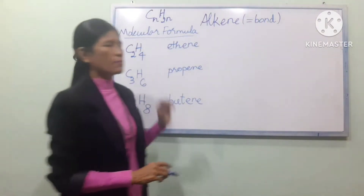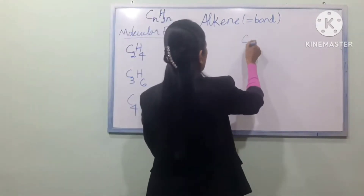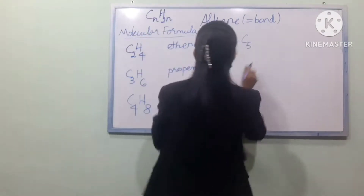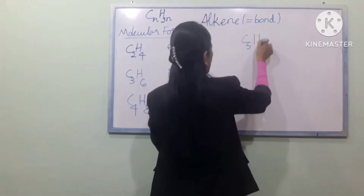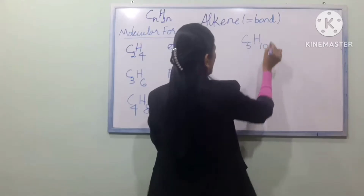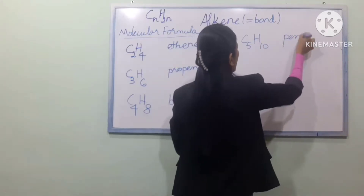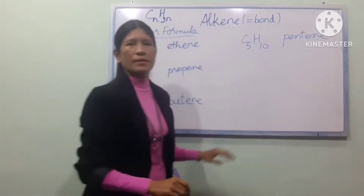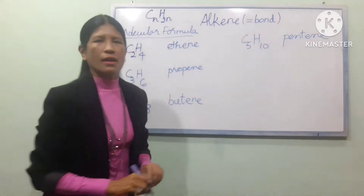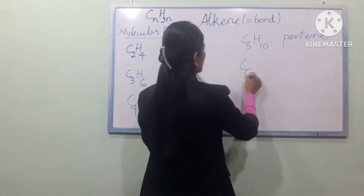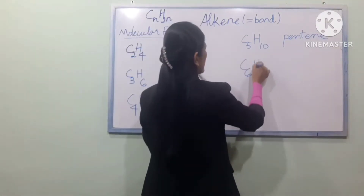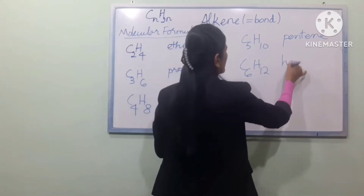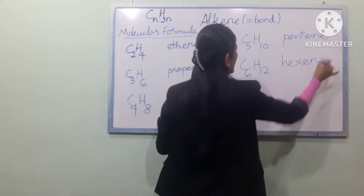For C5, we use C5H10. For C6, we use C6H12, and the name is hexene — H-E-X-E-N-E.